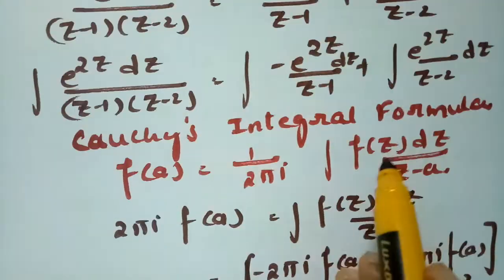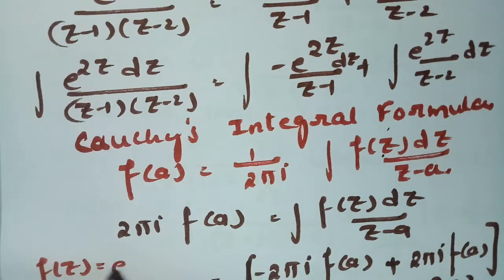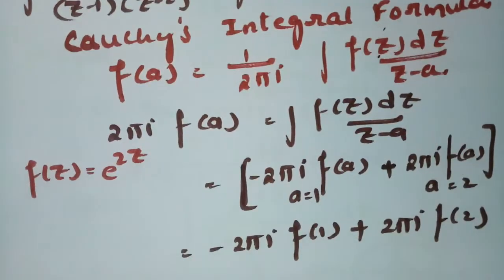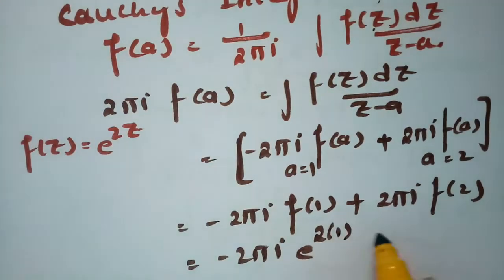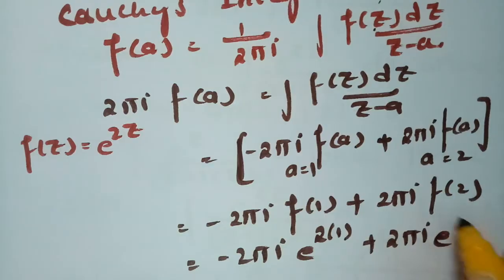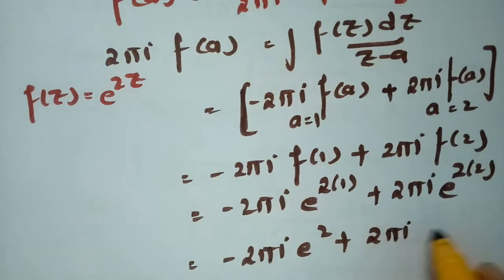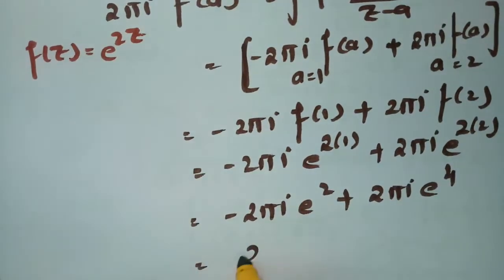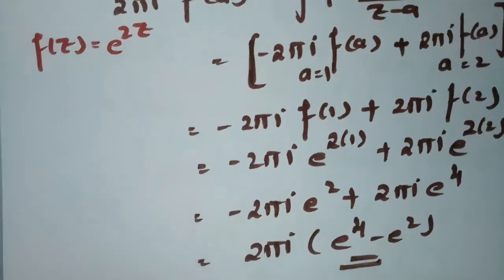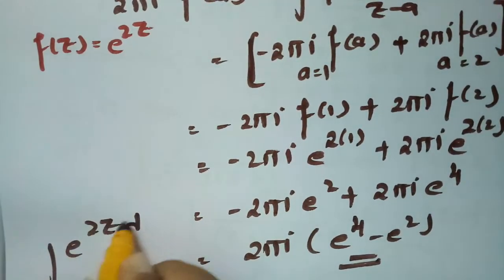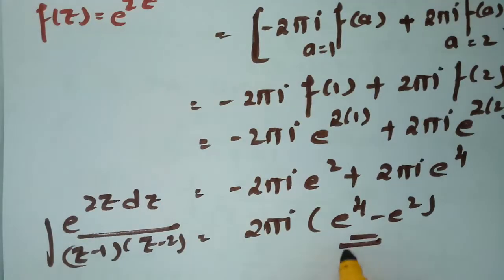Since f(z) = e^(2z), we have f(1) = e^2 and f(2) = e^4. Therefore the result is: -2πi · e^2 + 2πi · e^4 = 2πi(e^4 - e^2). This is the value of the integral ∫ e^(2z)/[(z-1)(z-2)] dz.